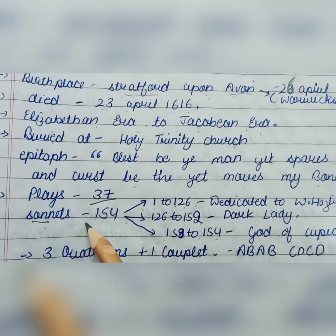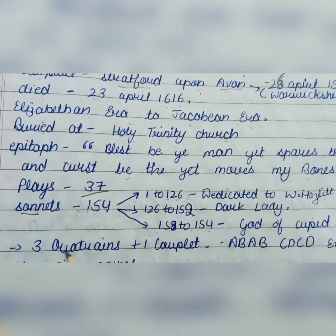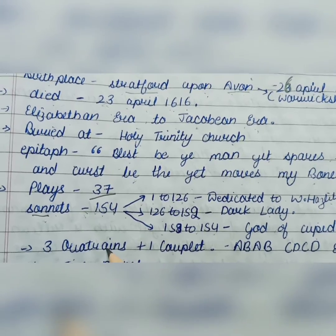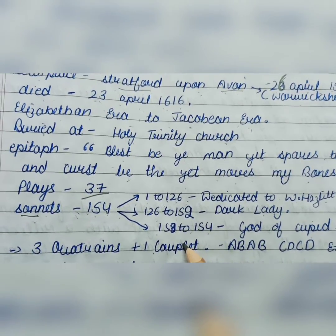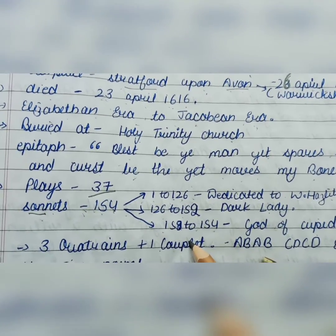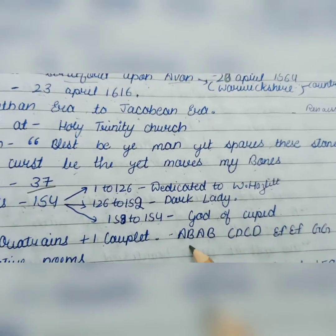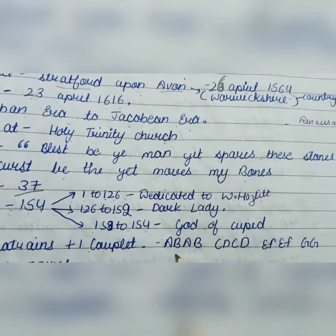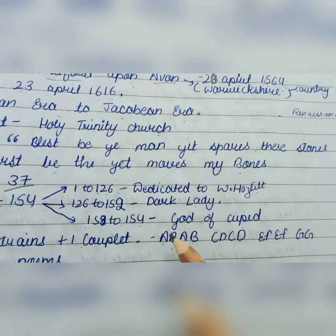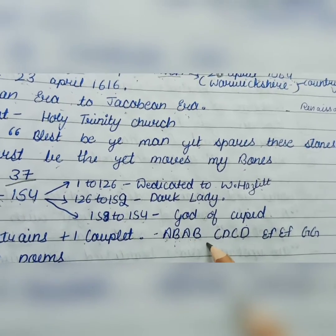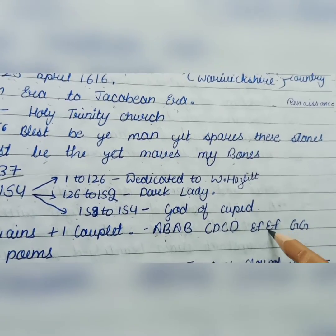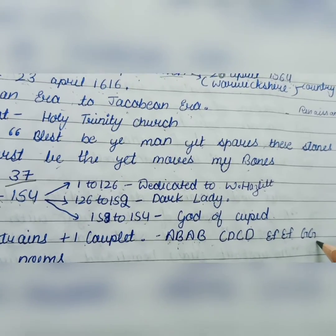A sonnet is a special poem consisting of three quatrains — that is, three stanzas of four lines each — and one couplet of two lines at the end, making 14 lines in total. Shakespeare's rhyme scheme for his sonnets was ABAB CDCD EFEF GG.